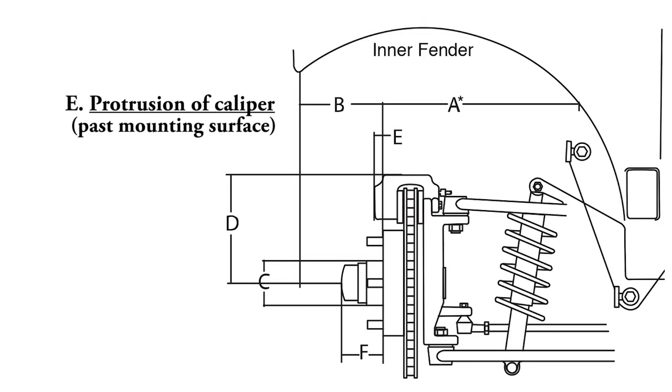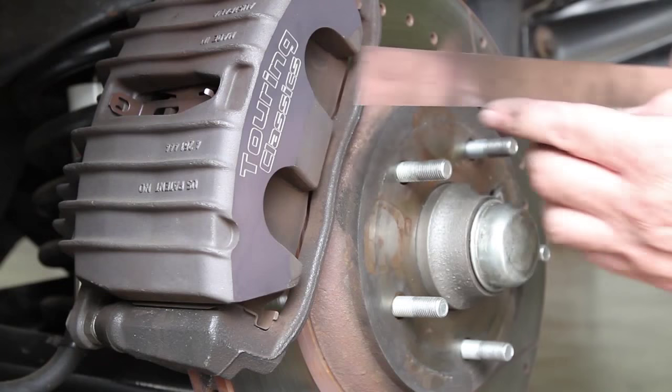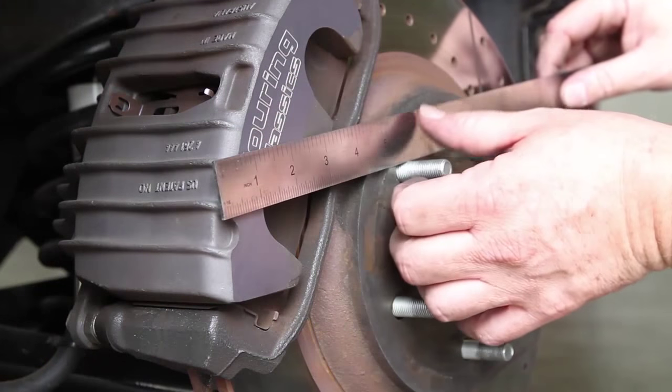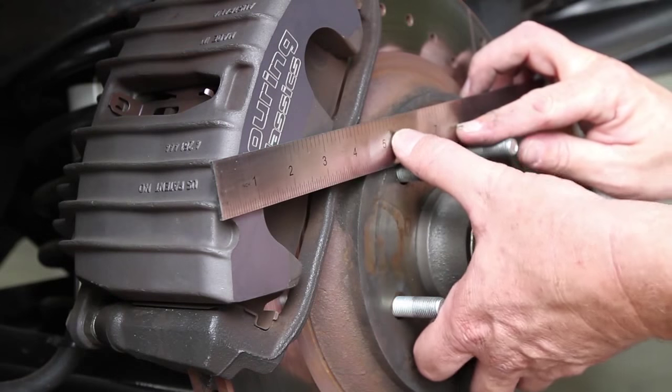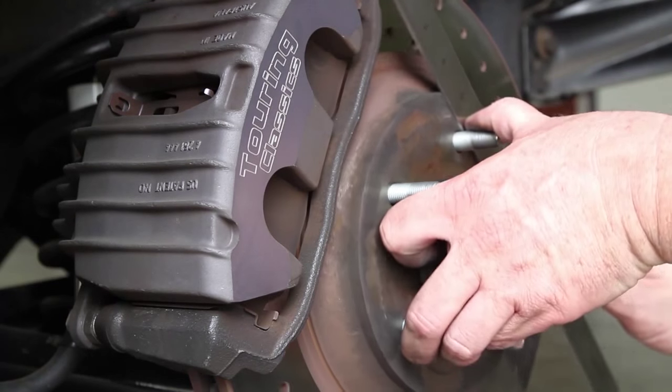Another crucial brake measurement that can affect wheel fitment is the amount the caliper protrudes past the wheel mounting surface. This is particularly important with aftermarket brakes with large multi-piston calipers. For this measurement, you will need to measure from the wheel mounting surface out to the face of the caliper. Write down this measurement for section E.